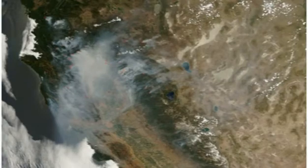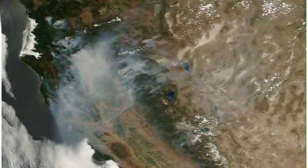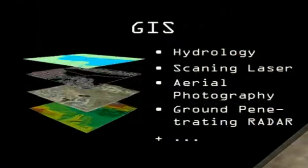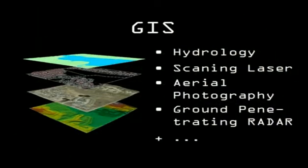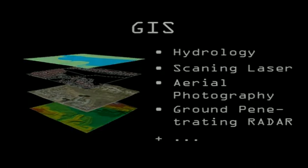Remote sensing technology could be further improved by enhancing rapid response capabilities in the event of, for example, a forest fire, and providing high-resolution data of the affected areas in real-time. Another big issue is the fusion of data from multiple different sensors, thus making the gathering of information by users easier.